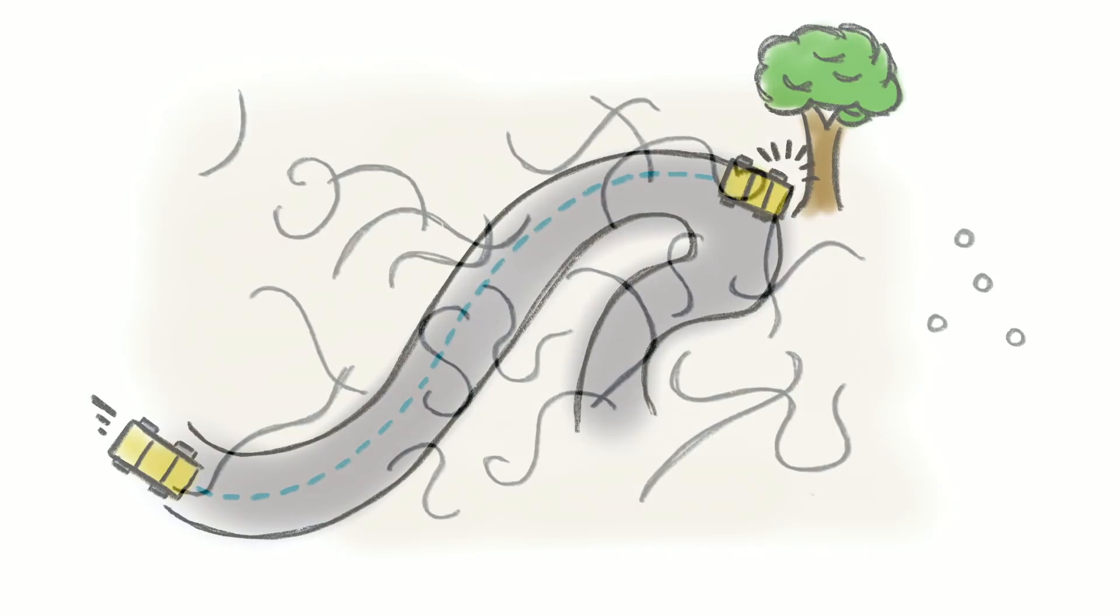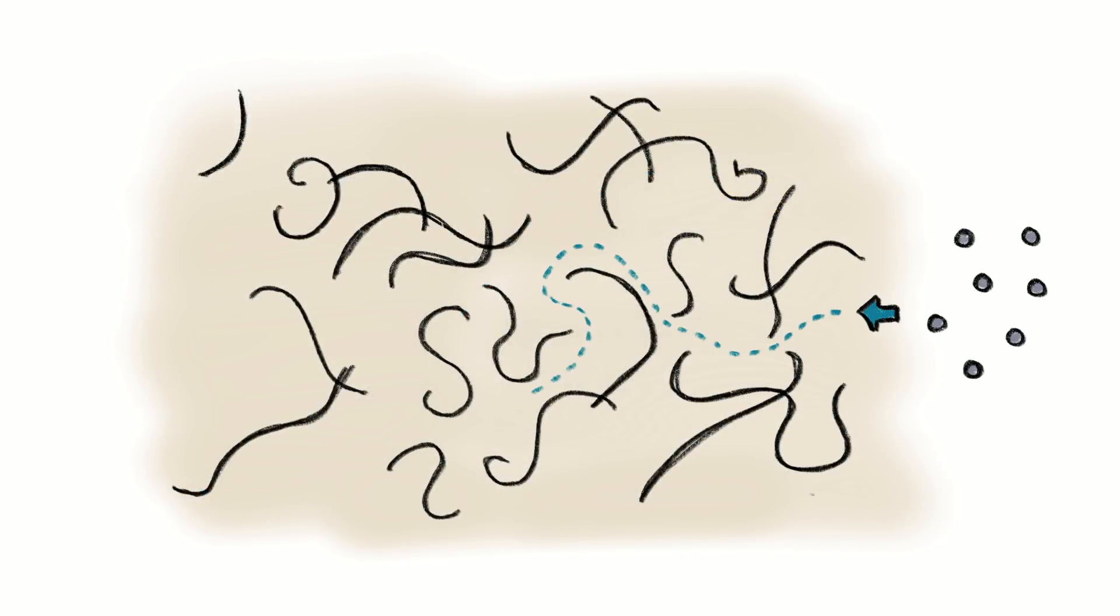It's the same for small particles speeding through a filter. As the air twists and turns, the particles can't keep up, and ultimately they end up crashing out and being caught. Because of their inertia, which just like the car depends on how massive they are and how fast they're going, they can't stay the course.